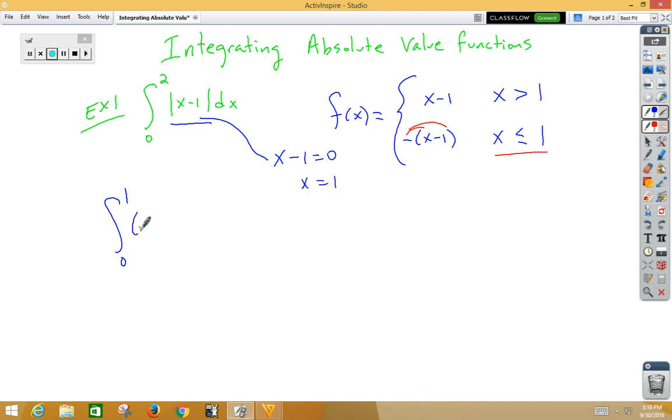so I'm going to get negative x plus 1 dx, plus my second integral from 1 to 2. That's the one that's greater than 1, so x minus 1 dx.